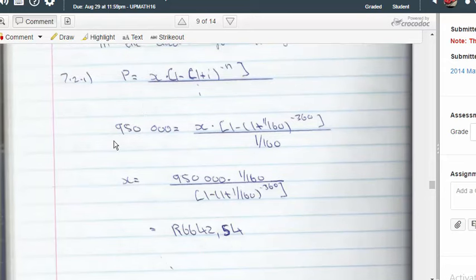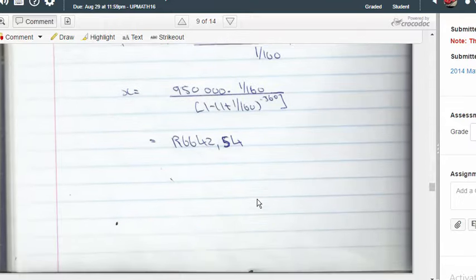Okay, so notice where we put the 950,000, that's our present value, and we are trying to work out what is our recurring payment, and there's the recurring payment.